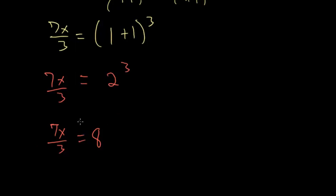With this equation here we can multiply each side by 3 to get rid of this fraction. If I multiply each side by 3, this 3 in the numerator and the denominator cancel so we're just left with 7x, and on the right-hand side is 24.